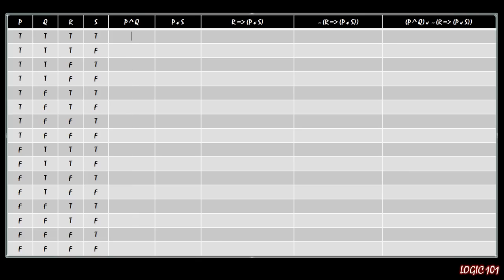Now let's go into the logical connectives. We have P AND Q, so we're looking at the first two columns and seeing when they're both true. Because in the top half P is true, and in the top-top quarter Q is true as well, this is going to be true for the first four rows and false all the way down.